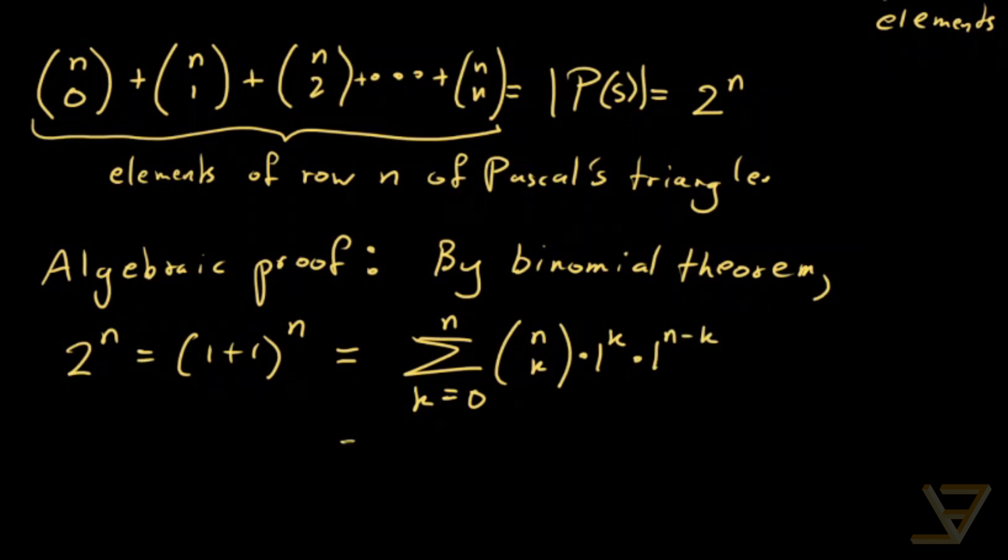And this sum over here is just n choose 0 plus n choose 1 plus n choose 2, all the way through to n choose n. So that proves our identity in a third way.